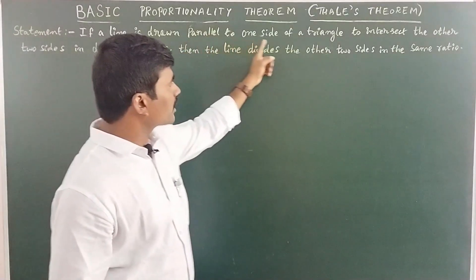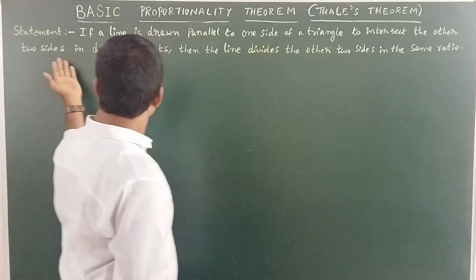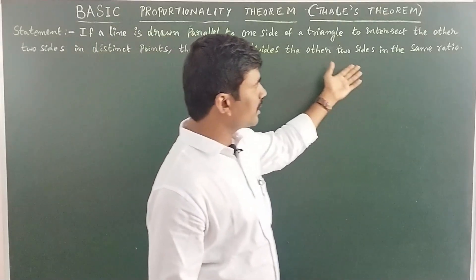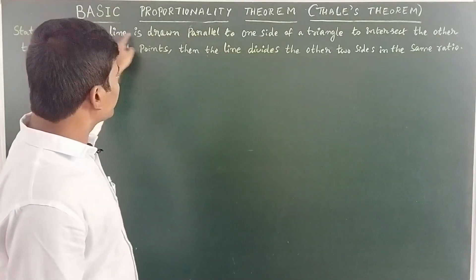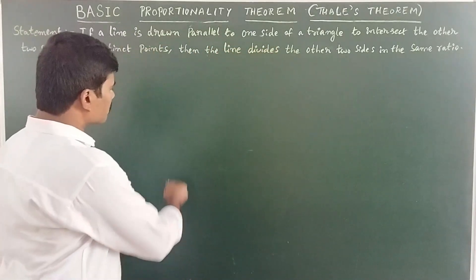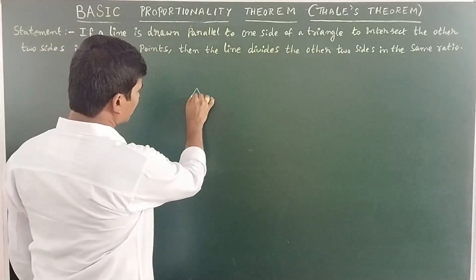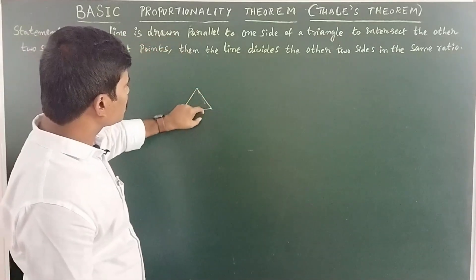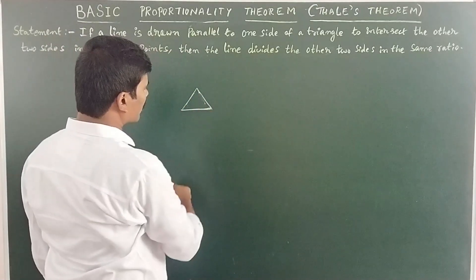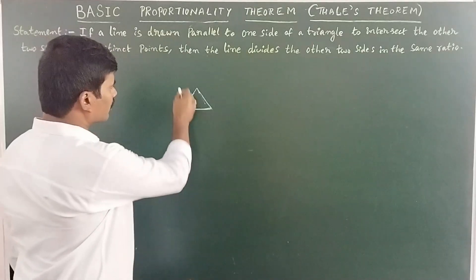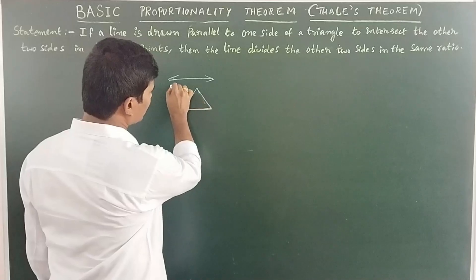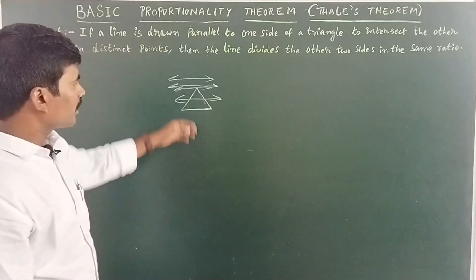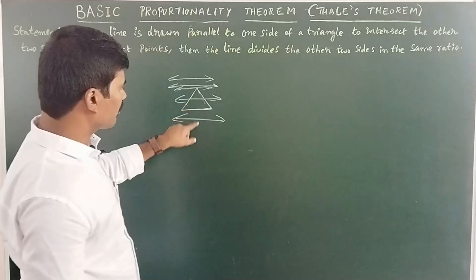Statement: if a line is drawn parallel to one side of a triangle to intersect the other two sides in distinct points, then the line divides the other two sides in the same ratio. For rough work — suppose we take a triangle and draw a line parallel to one side. We can draw the parallel line in various positions like this.